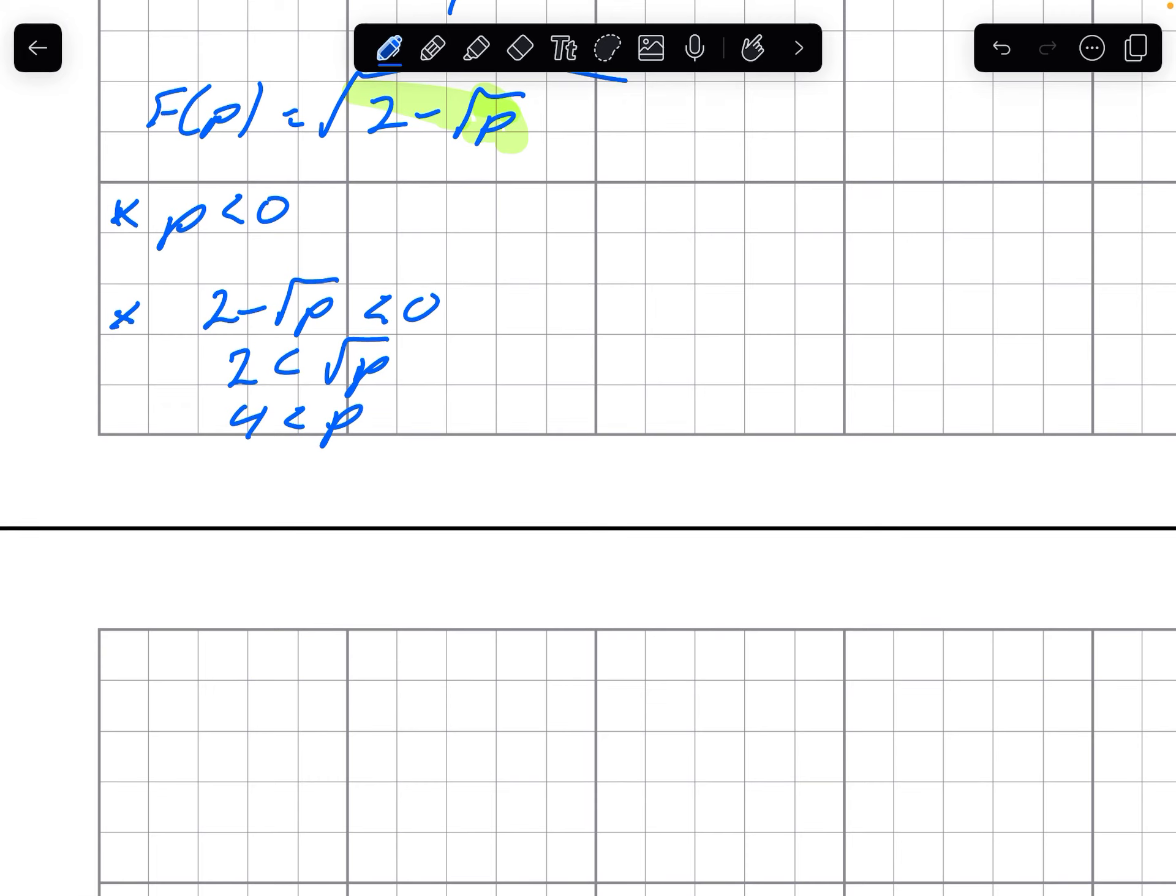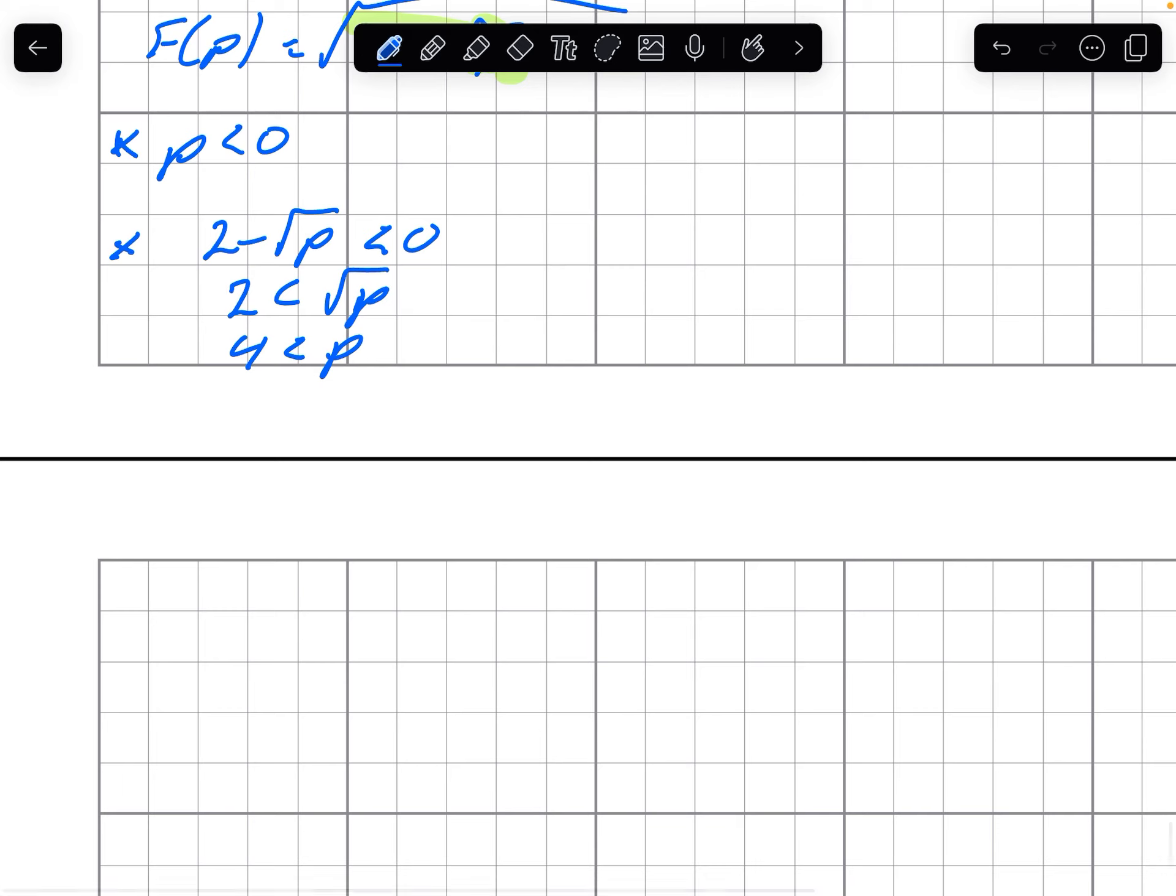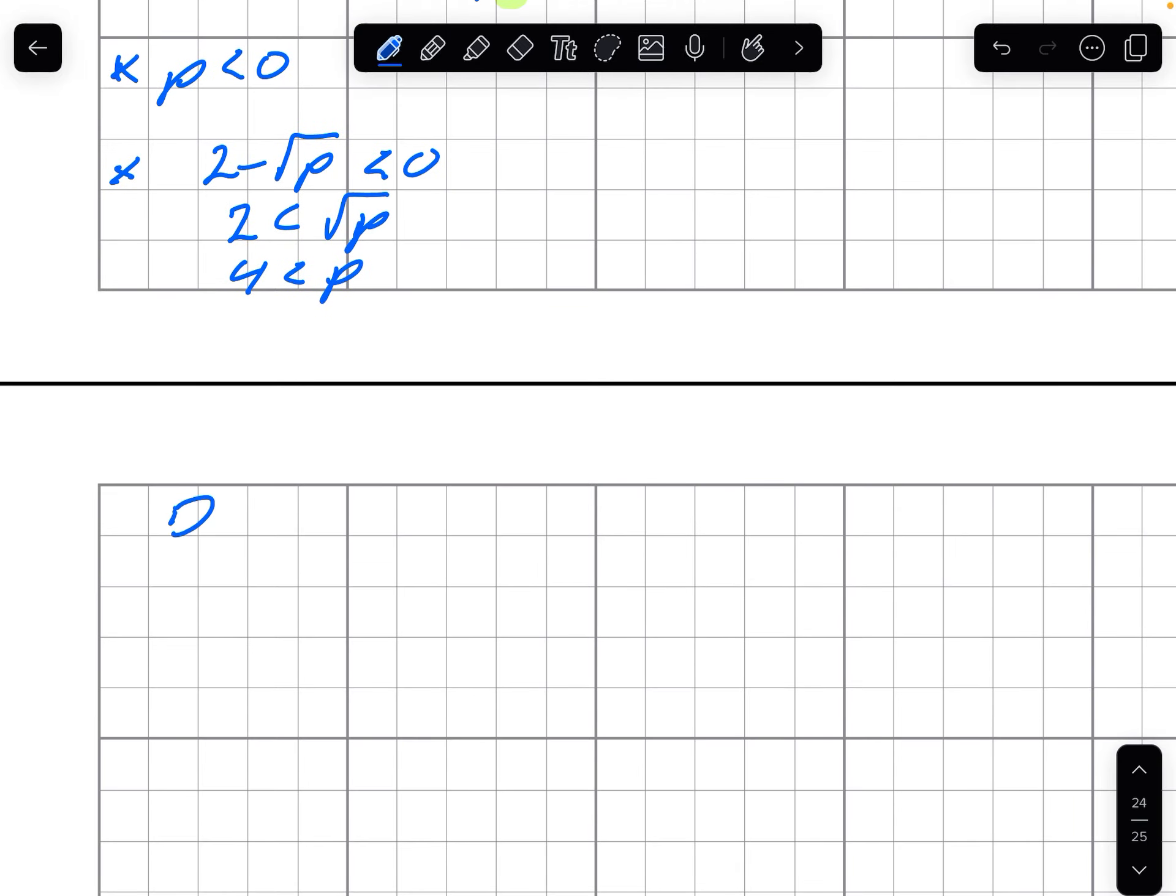So p, which I guess p is greater than 4. So we have issues where p is less than 0 or greater than 4. So our domain is p in the reals, such that 0 is less than or equal to p, less than or equal to 4.